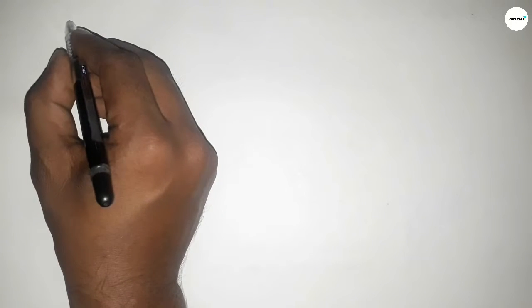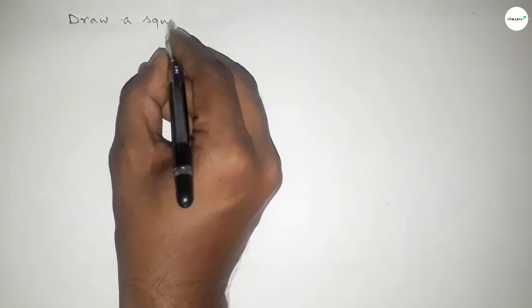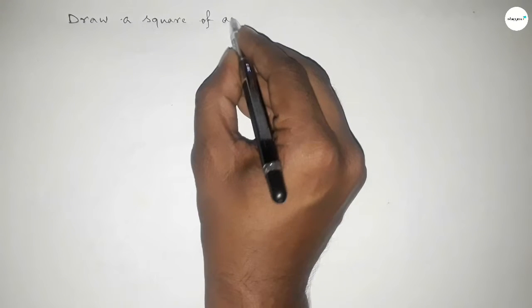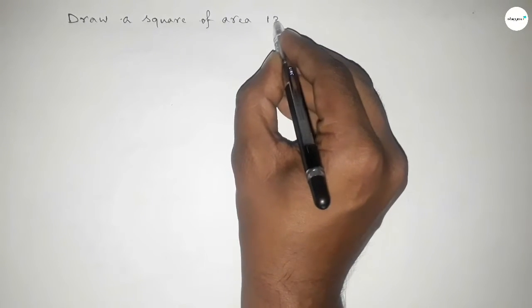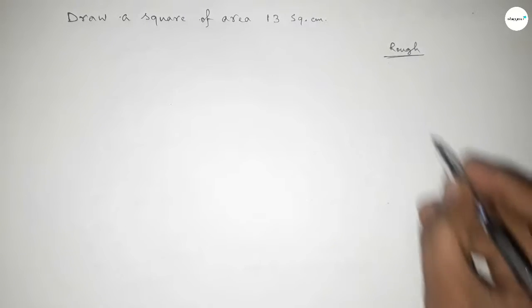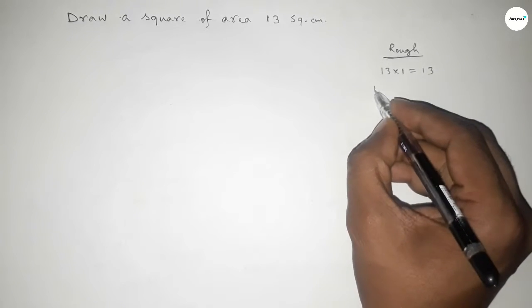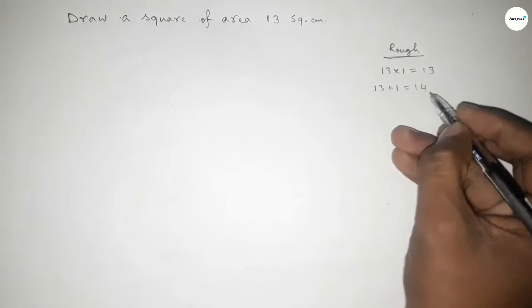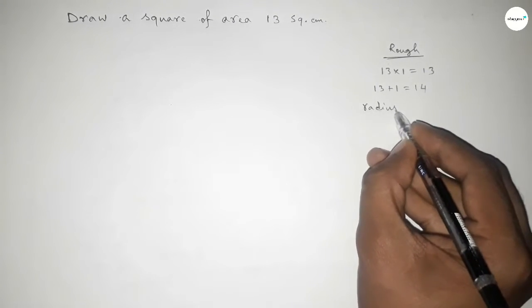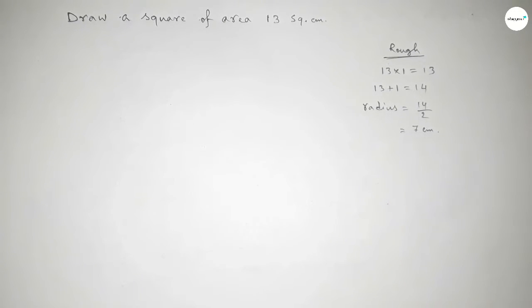Welcome to SISR classes. Today we have to draw a square of area 13 square centimeters. We can write 13 × 1 = 13, and 13 + 1 = 14. So we have to draw a semicircle with diameter 14 centimeters, which means radius equals 7 centimeters.